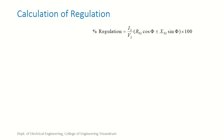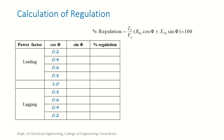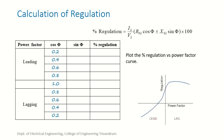For the calculation of regulation, the regulation expression is used for different values of power factor — leading, lagging, and unity. A table of regulation values is computed and a regulation versus power factor curve is plotted. It can be noted that for some leading power factor values, the regulation goes towards the negative side, which is an important point to be noted.